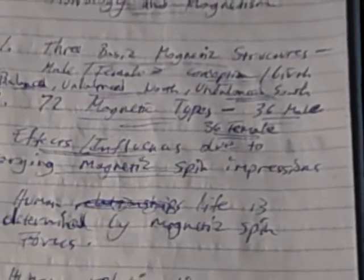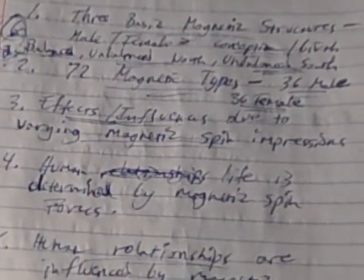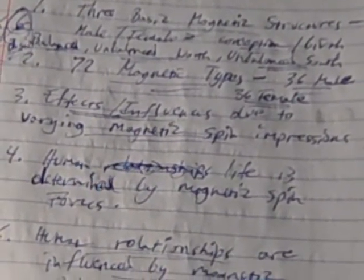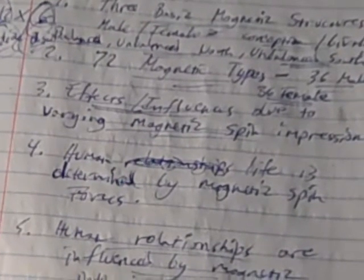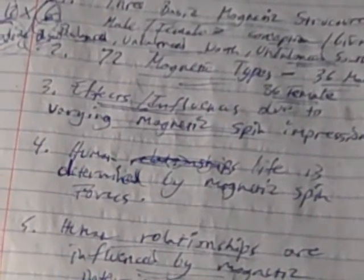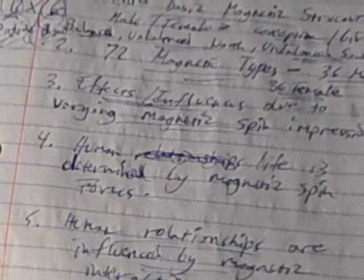So you basically could argue that there may be 36 male and 36 female magnetic types of individuals. So 72 magnetic types. So 72 types of astrology rather than just 12.